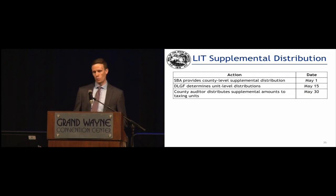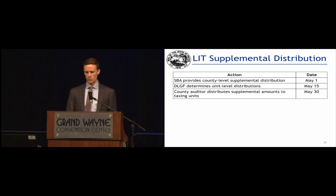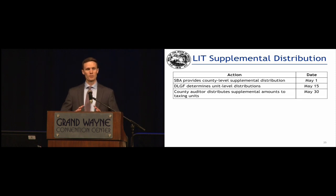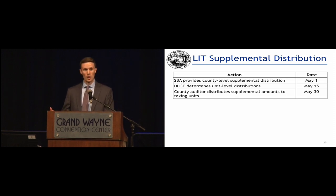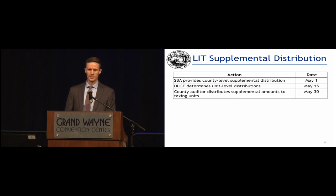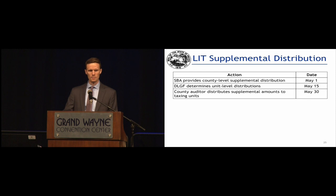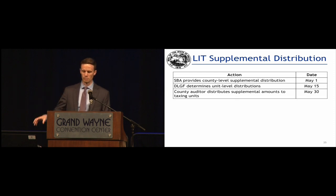The timeline for supplemental distributions: each year by May 1, the State Budget Agency will provide to counties and to DLGF the total amount of supplemental distribution money available at a county level. Our task two weeks later is to provide a breakdown by taxing unit, which we did this year, along with an additional breakout pertaining to the old LOWIT buckets. Your task by May 30th is to distribute that money to the local taxing units in your county. You receive the money from the Auditor of State and then by end of month provide it to the taxing units based upon the distribution amounts DLGF calculates.